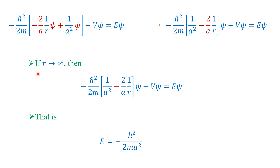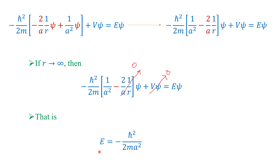Therefore the energy eigenvalue is E = -h-cross²/(2ma²). This is the energy eigenvalue for this problem — specifically obtained by taking the limit as r→∞ where V vanishes and the 1/r term drops out.